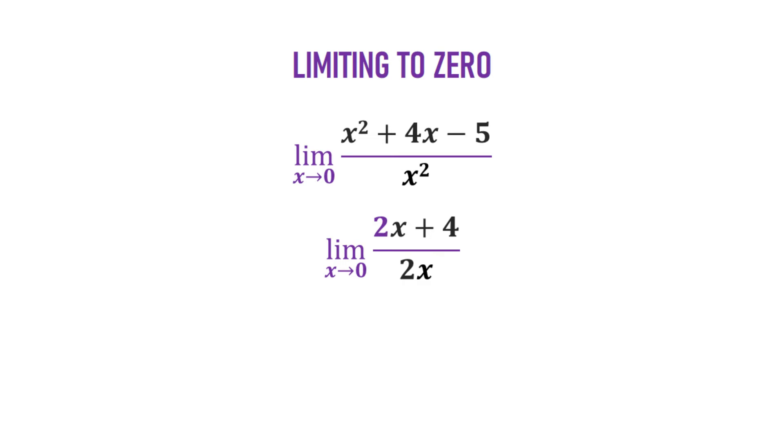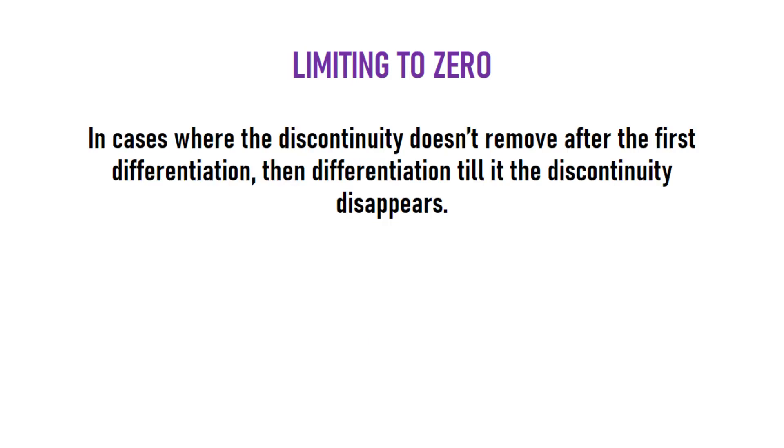Differentiating it gives us 2x plus 4 as the numerator and 2x as the denominator, right? But, we can't still put 0 because it will still make it undefined. Then, if you are faced with this kind of situation, you have to differentiate again. Differentiating again gives us 2 as the numerator and 2 as the denominator, right? Then, we have 1 as the answer. Now, this is it. In cases where the discontinuity does not remove after the first differentiation, then differentiate till the discontinuity disappears.